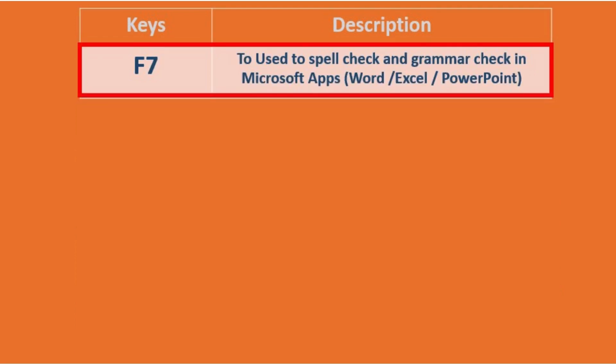F7 key is used to spell check and grammar check in Microsoft apps: Word, Excel, and PowerPoint.